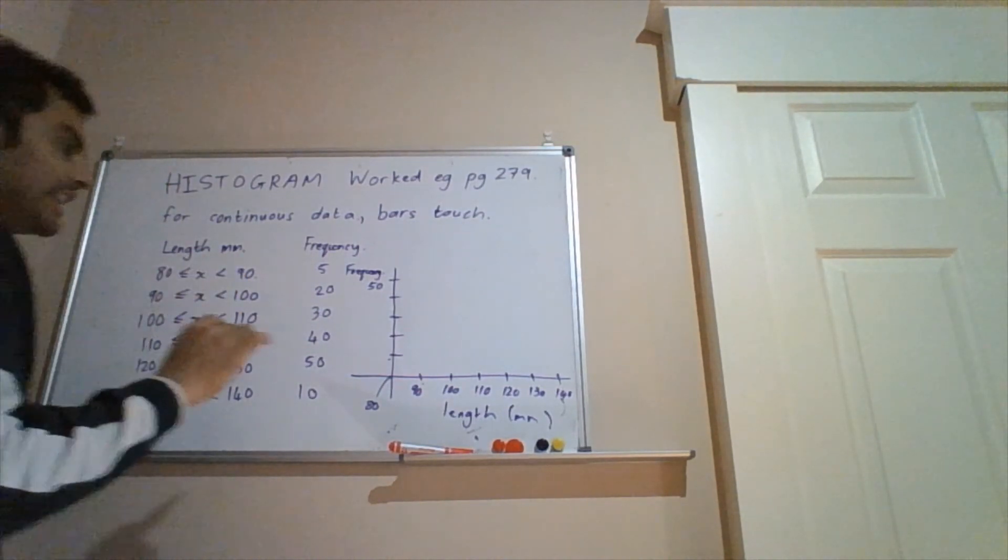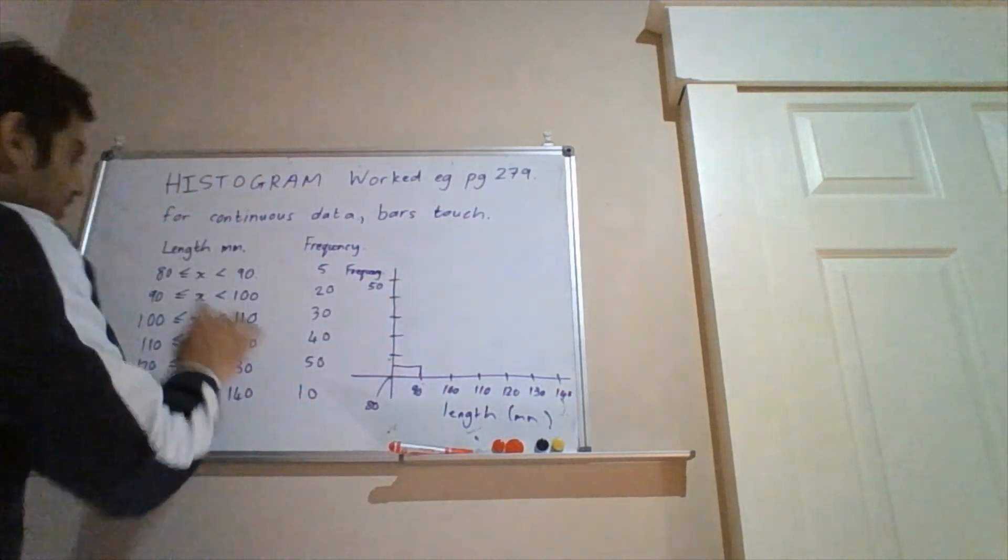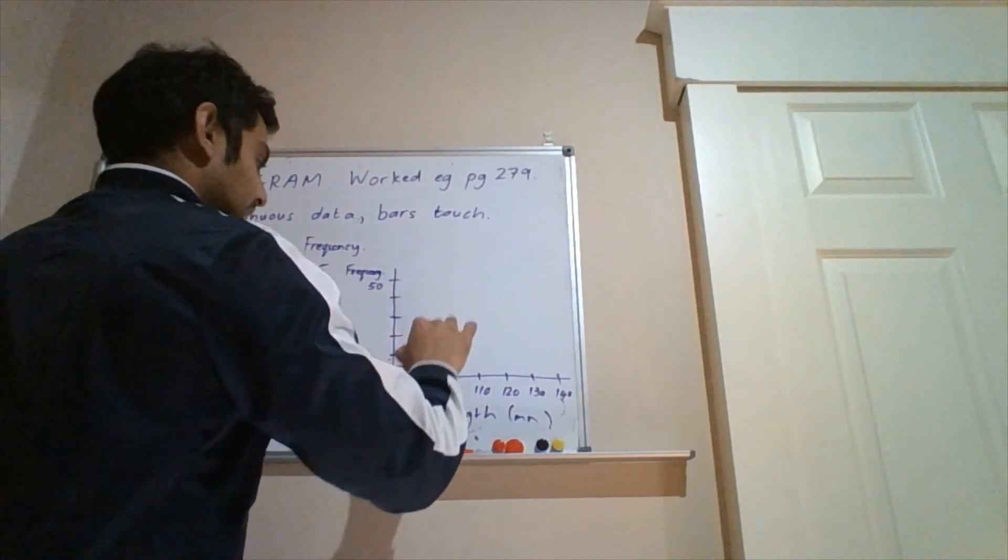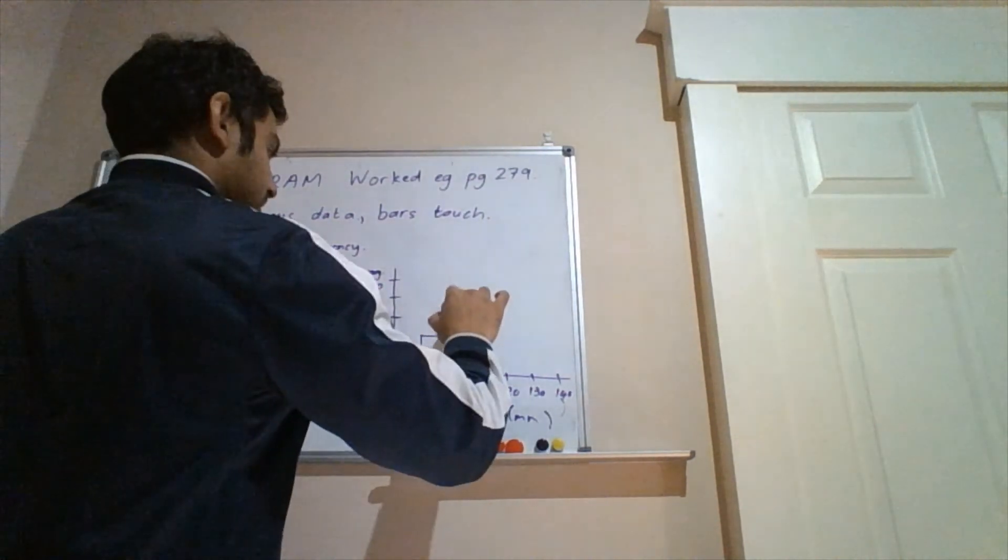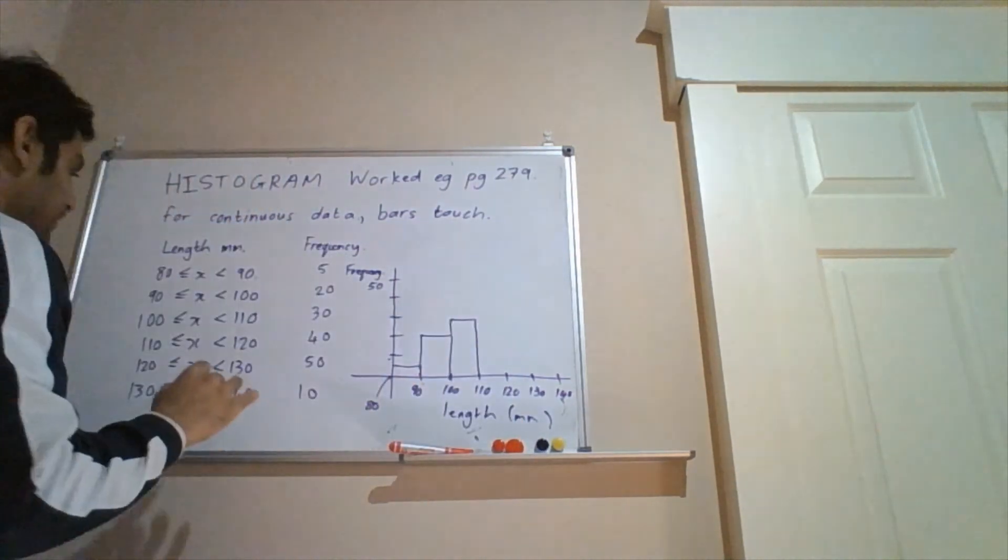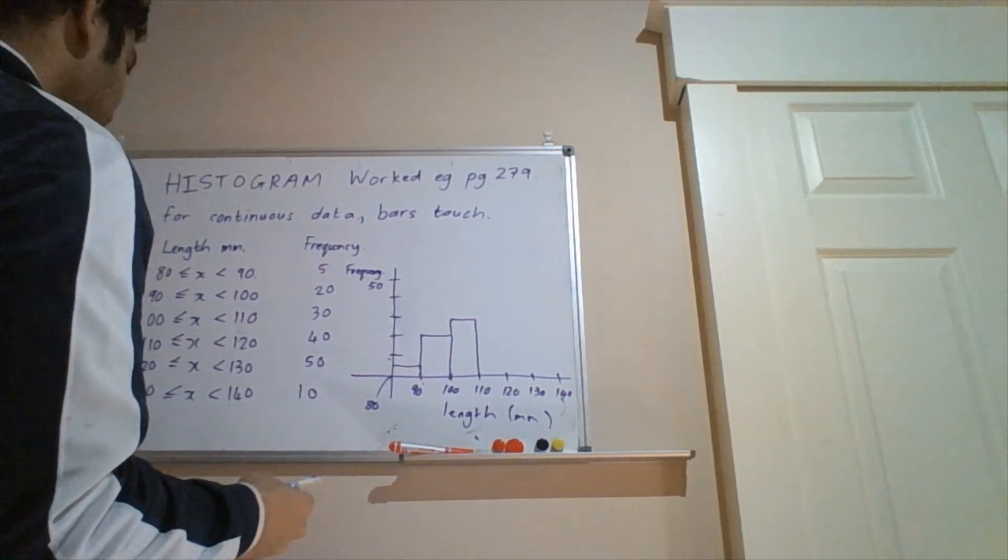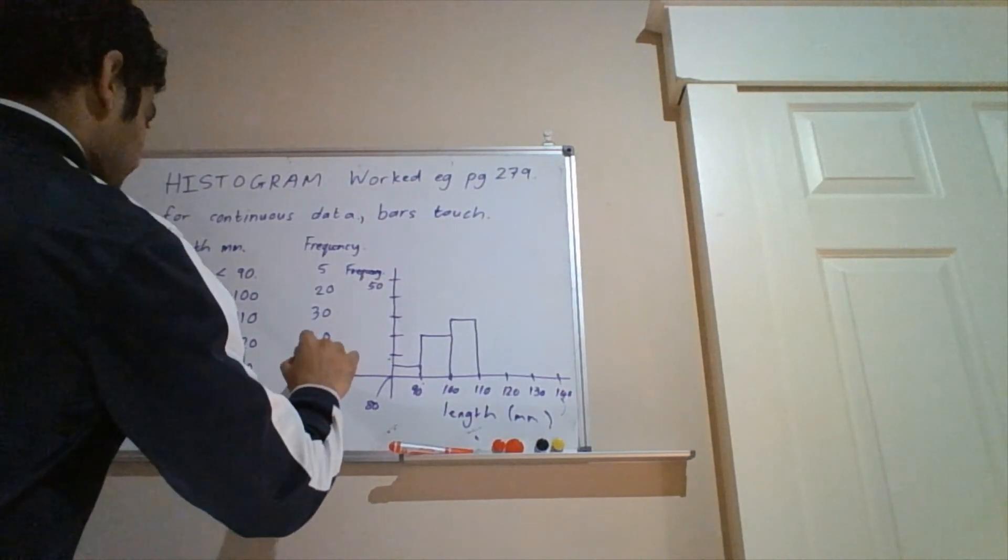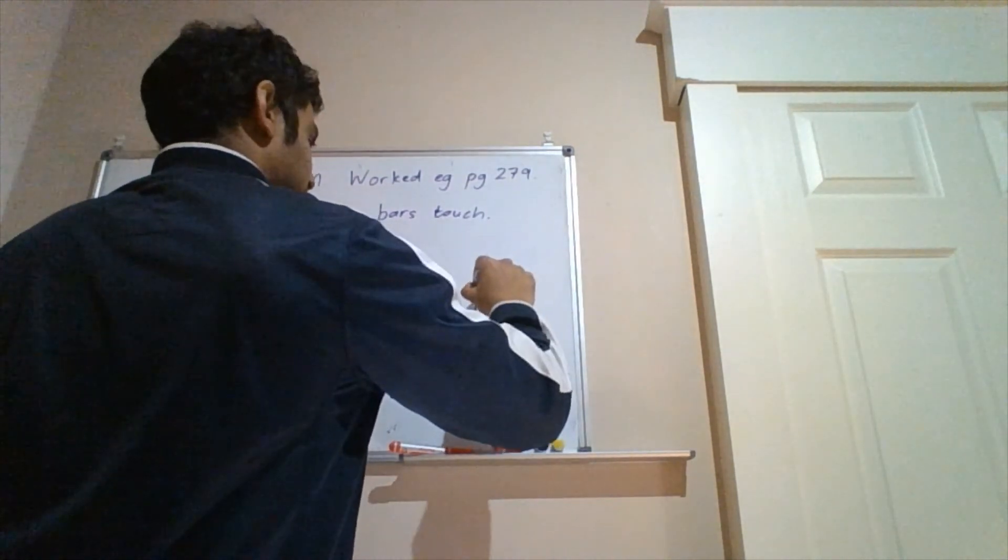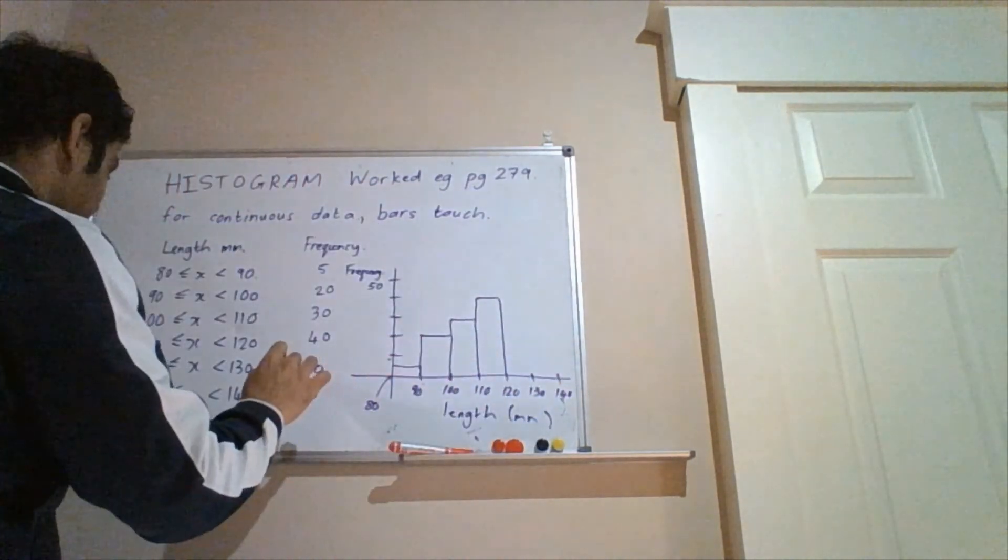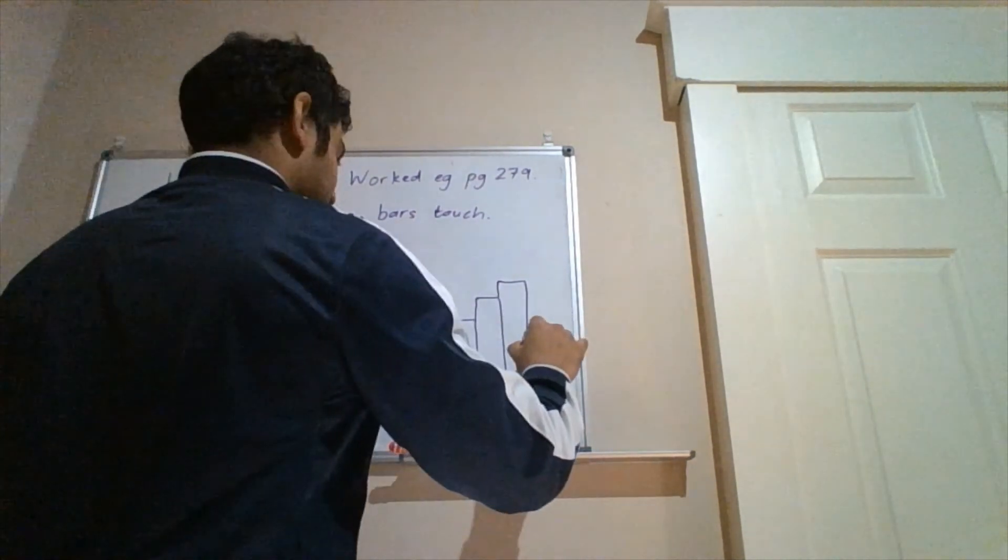So for 80 to 90, we have 5. So remember, each of these intervals is 10. So 5 is going to be midway. From 90 to 100, we have 20. So we go 10, 20. 100 to 110, we've got 30. 110 to 120, that's 40. So that's there. And then 120 to 130 is our maximum frequency at 50. And then 130 to 140 is 10.